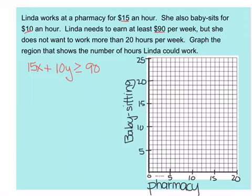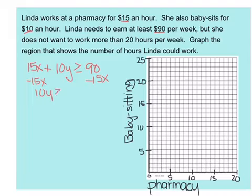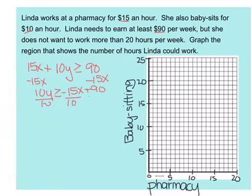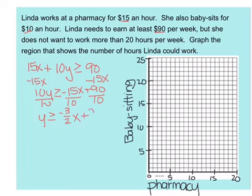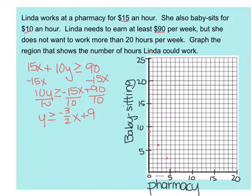If pharmacy hours are my x's, I start with 15x. Babysitting is my y, and I make $10 per babysitting hour. I want to earn at least $90 per week, so: 15x + 10y ≥ 90. To graph this, I solve for y by subtracting 15x. I get 10y ≥ −15x + 90, then divide by 10. I get y ≥ −3/2 x + 9. I'm going to start at 9 and go down 3 and over 2. It's a solid line, and I'm shading everything above that line because it's a greater than symbol.